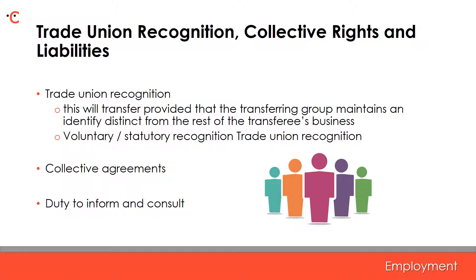Moving on to look at trade union recognition, collective rights and liabilities. If an independent trade union is recognised by the transferor in respect of any of the transferring employees, this recognition will transfer to the transferee, provided that the transferring group maintains an identity distinct from the rest of the transferee's business. It is unclear exactly what is required for the transferred group to maintain an identity distinct from the rest of the transferee's business. However, if the transferring group is fully integrated into the transferee's existing business after the transfer, it is highly unlikely that union recognition will transfer.